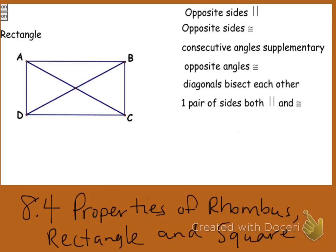Okay, so here's A4. A4 should be almost as equally easy as A2 and A3, but what we're going to do is talk about the properties of a rhombus, rectangle, and a square, all of which are parallelograms. So let's just jump right in.